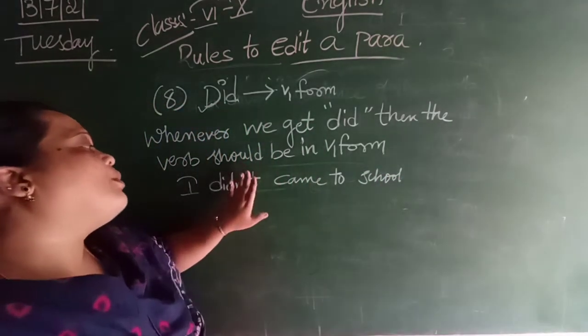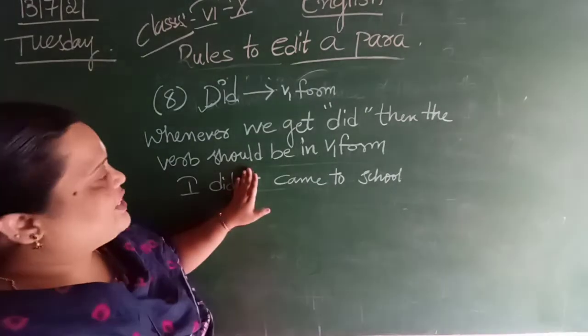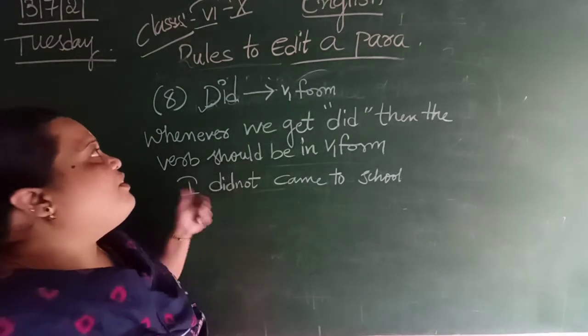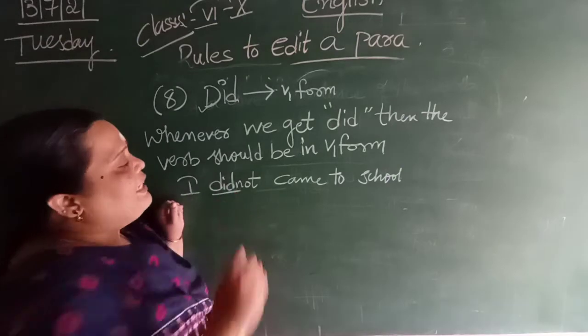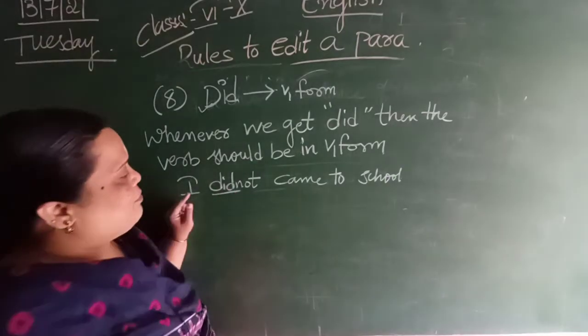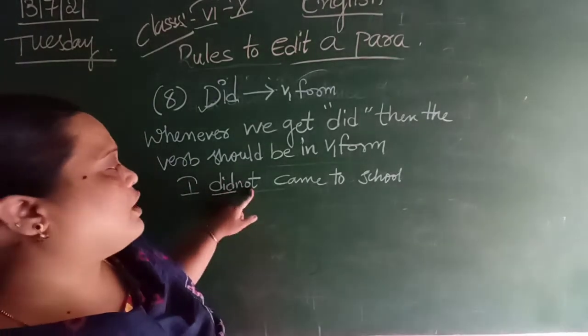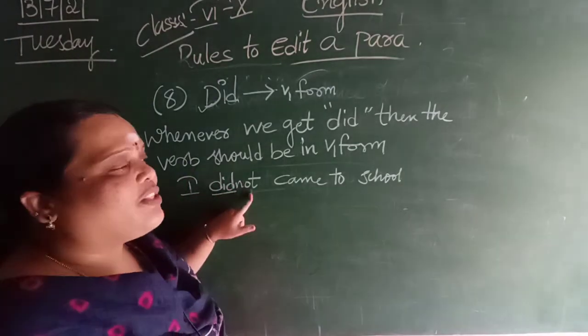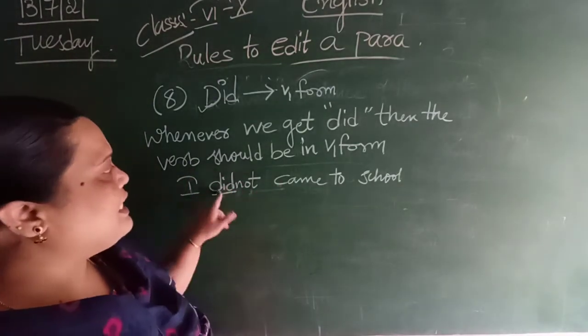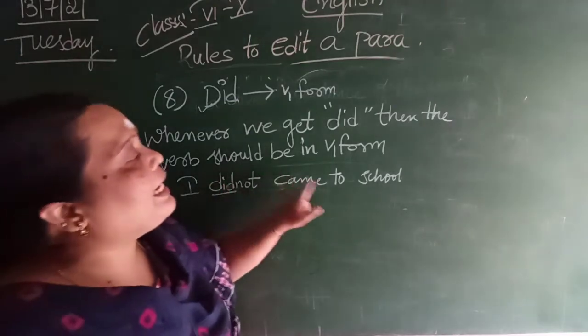Now, we are not going to concentrate on this contraction not. Now, just, we will be focusing on the word did. Did and the word focused with them. See. I did not. Okay. While reading the sentence, we will use not. But for verb, we will be just seeing did. I did not came to school.